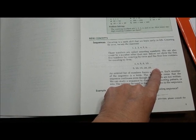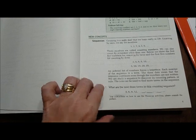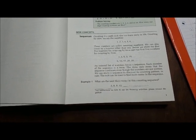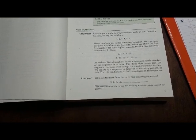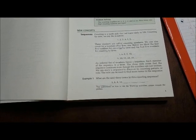What would be next? 30. Alright. An ordered list of numbers form a sequence. Each member of the sequence is a term. The three dots means that the sequence continues even though the numbers aren't written.